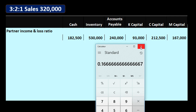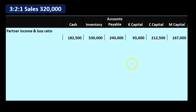We need to understand how to calculate those because if we don't, we can't move forward with many partnership problems. So that gives us roughly 50% for K, about 33.33% for C, and about 16.67% for M — the profit sharing we'll use throughout the liquidation process.